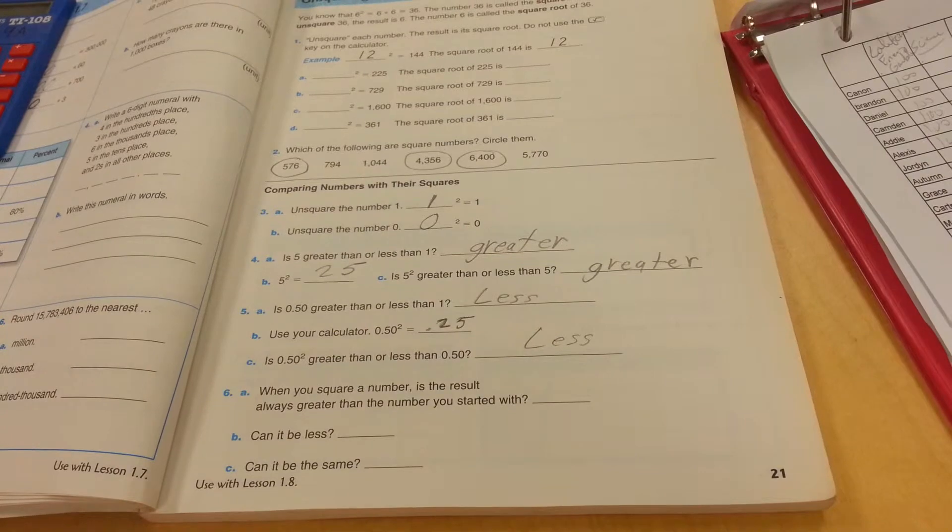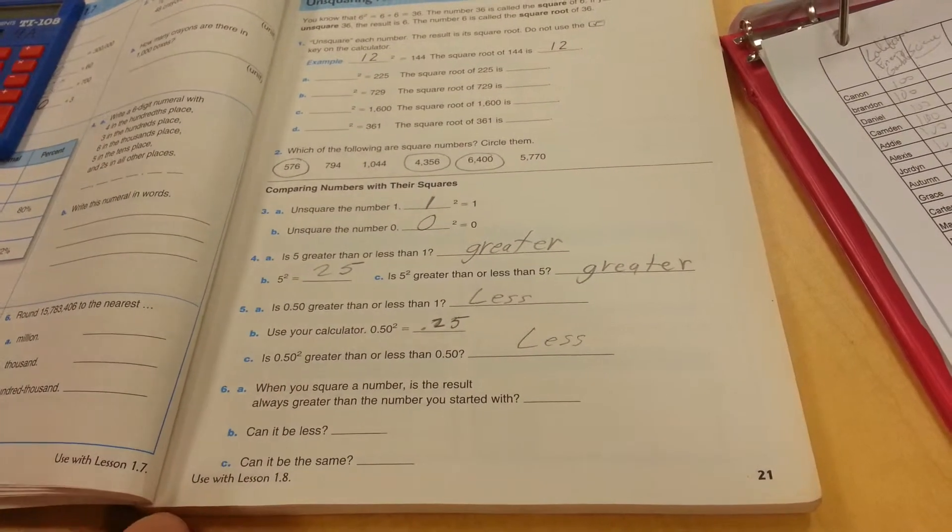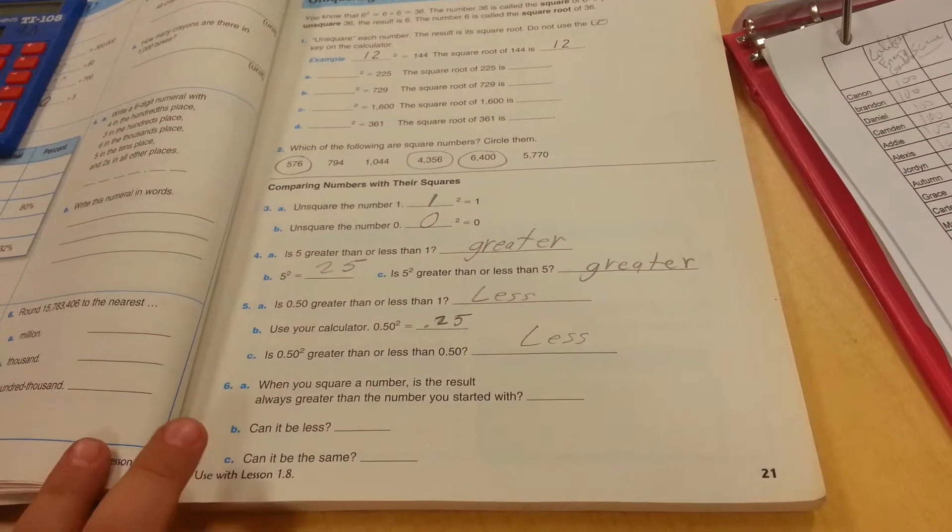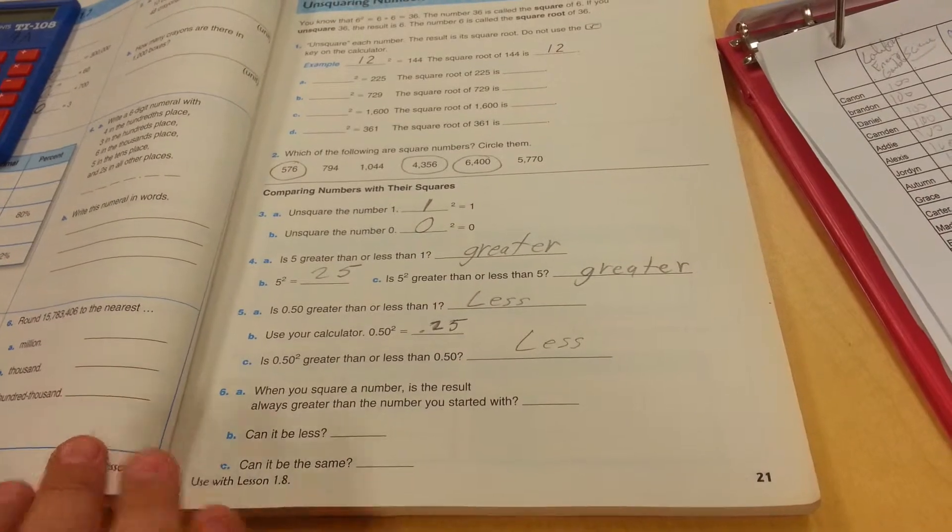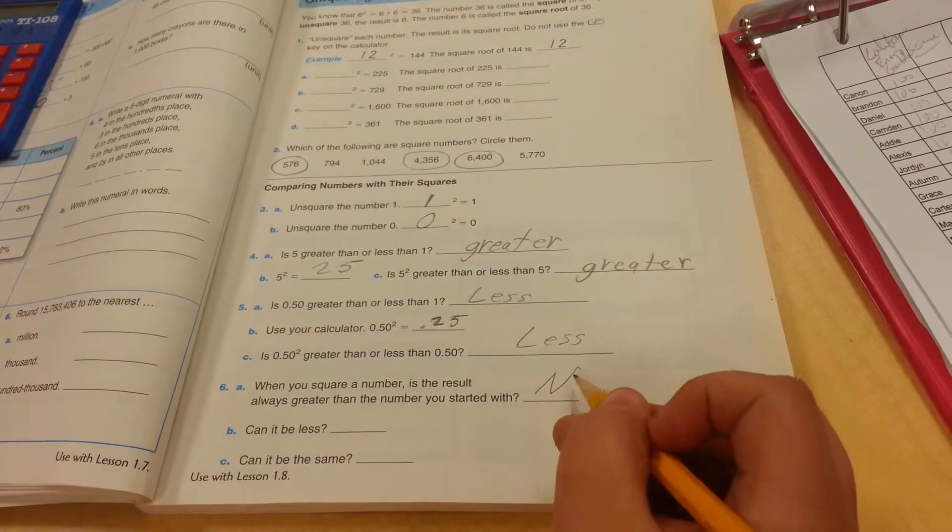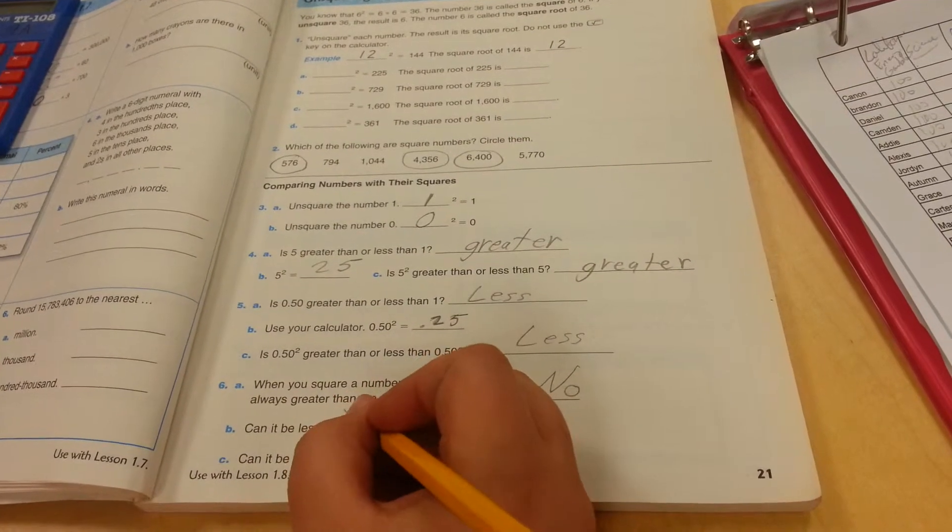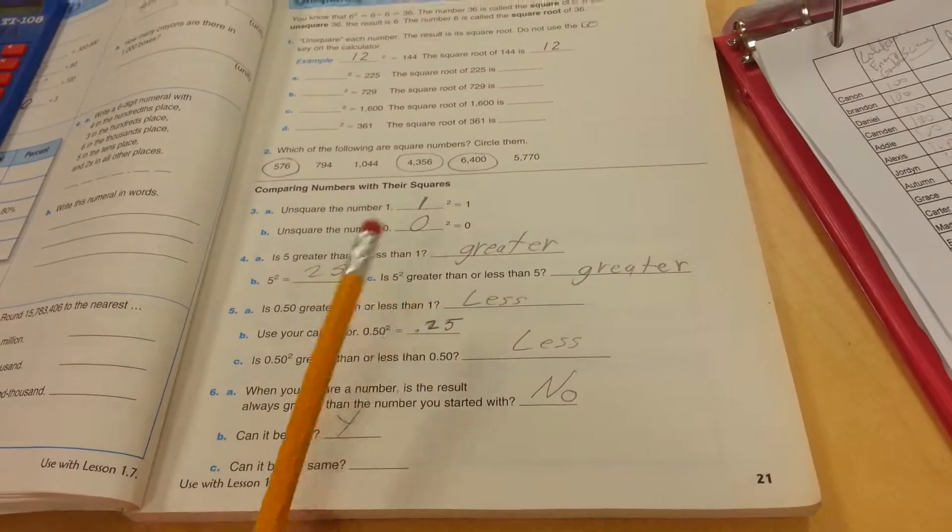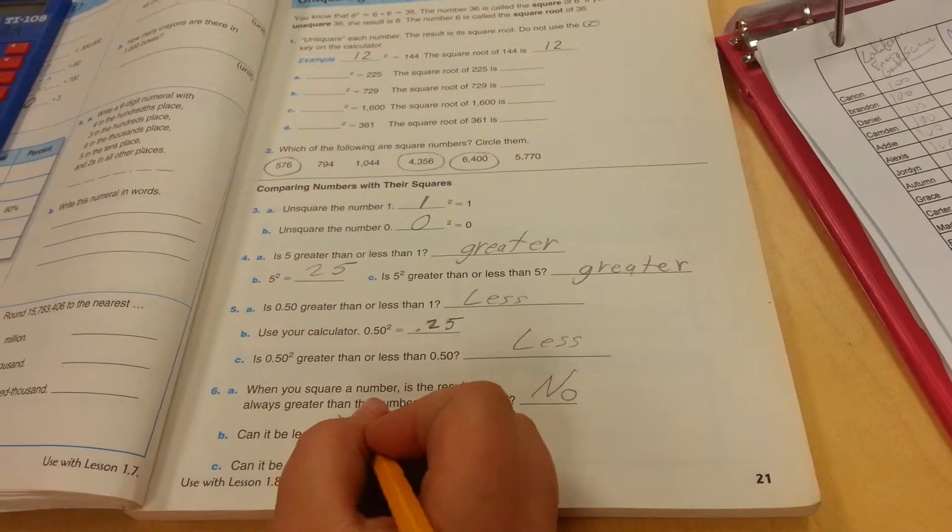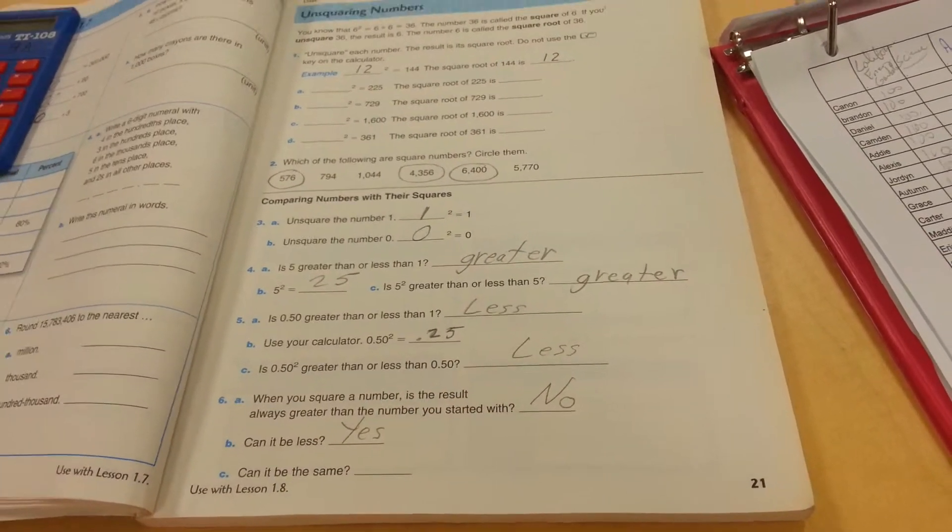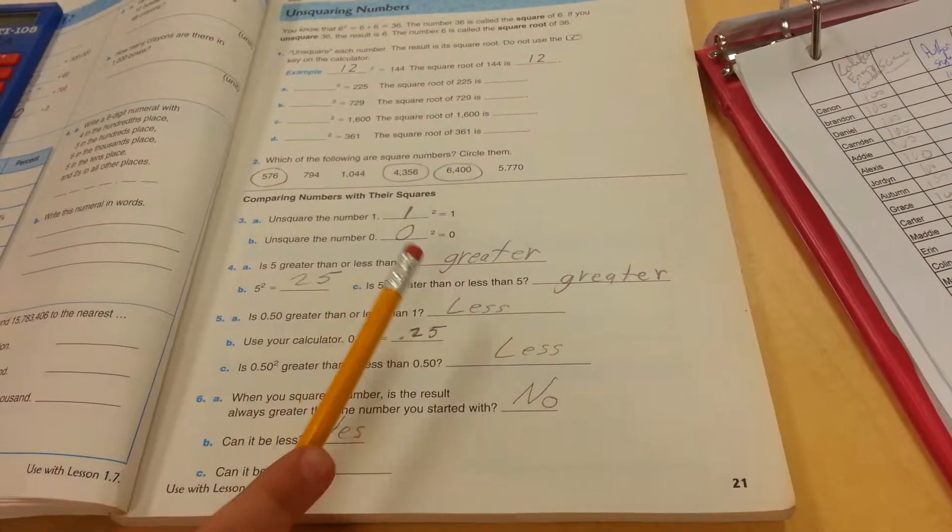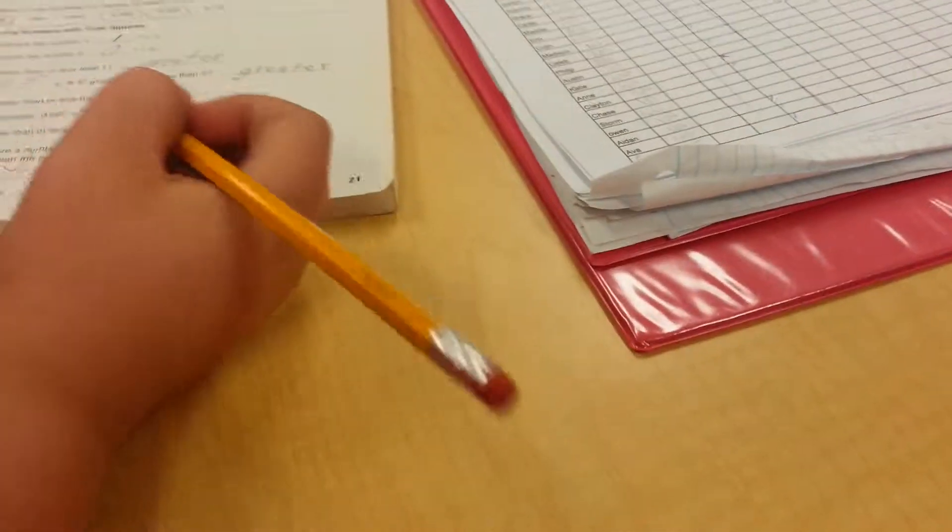When you square a number, is the result always greater than the number you started with? No. Can it be less? Yes. It could be less, because 1 or lower. Can it be the same? Yes. Zero and 1 are a good example. Daniel, you're right.